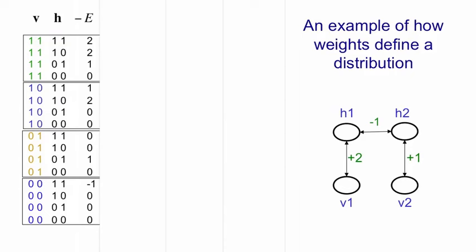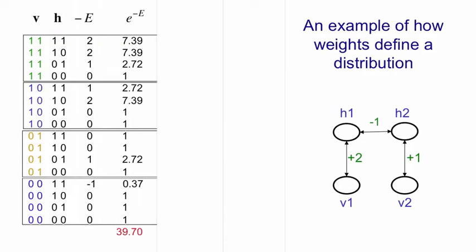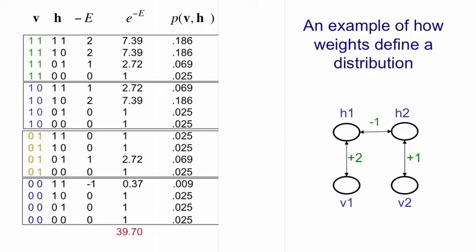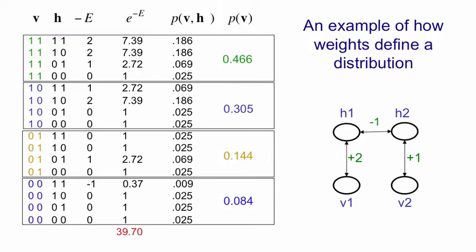So these are the unnormalized probabilities of the configurations. Their probabilities are proportional to this. If we add all those up to get 39.7 and then we divide everything by 39.7 we get the probabilities of joint configurations. There they all are. Now, if we want the probability of a particular visible configuration we have to sum over all the hidden configurations that could go with it. And so we add up the numbers in each block and now we've computed the probability of each possible visible vector in a Boltzmann machine that has these three weights in it.